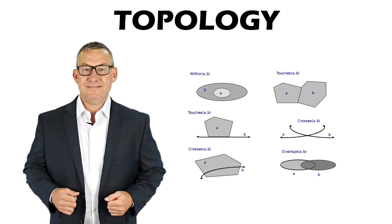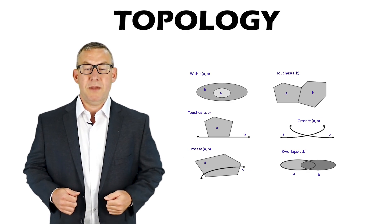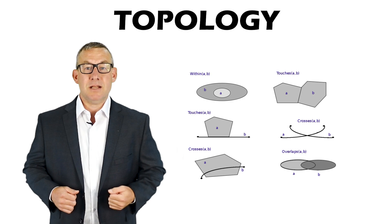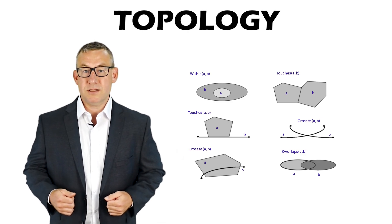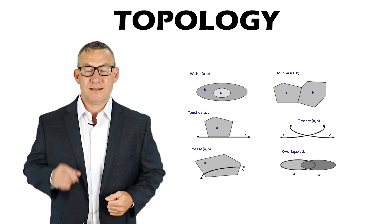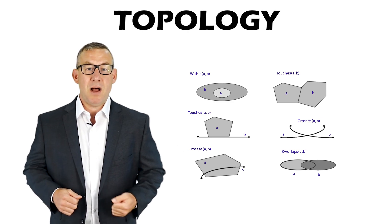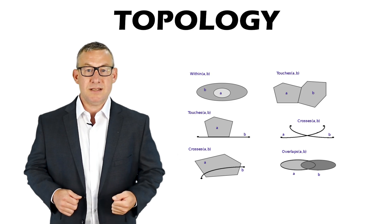Topology are rules about how point, line, and polygon features share geometry. Topology can reduce file size by recording shared lines or points only once. Topology usually consists of rules about adjacency, connectivity, and enclosure.